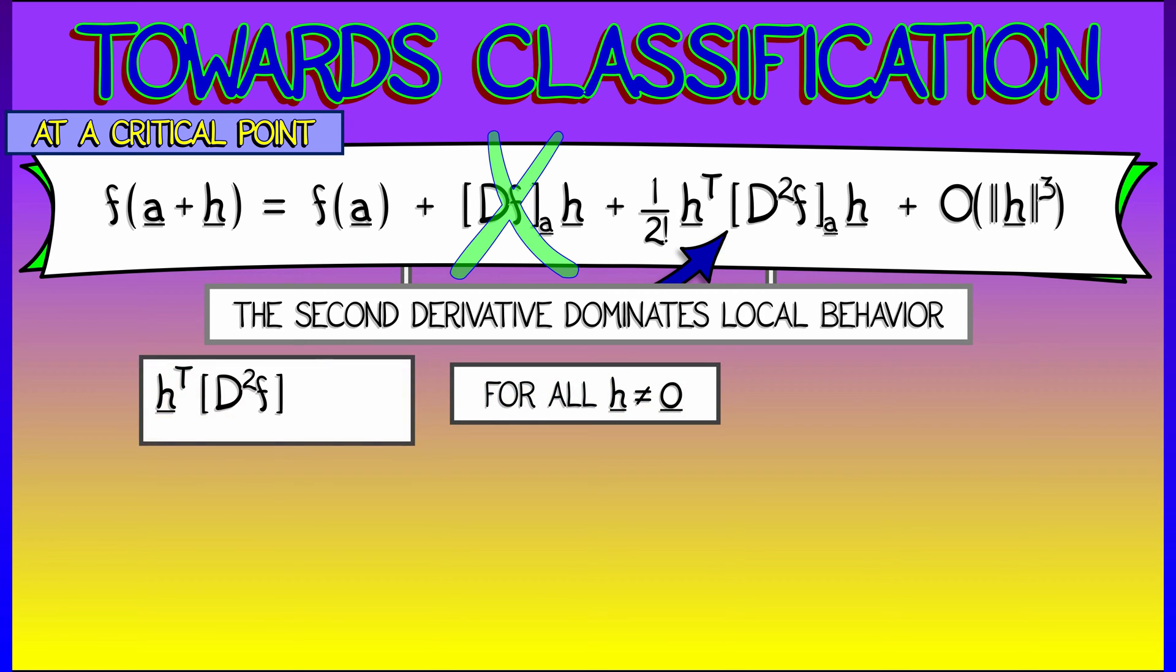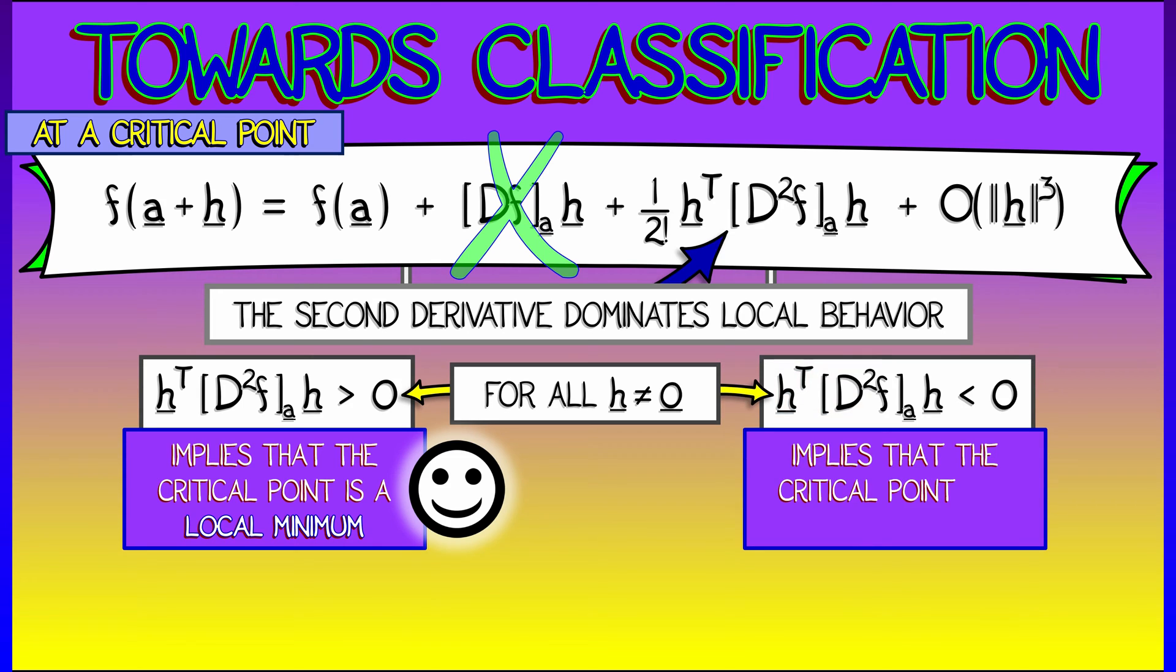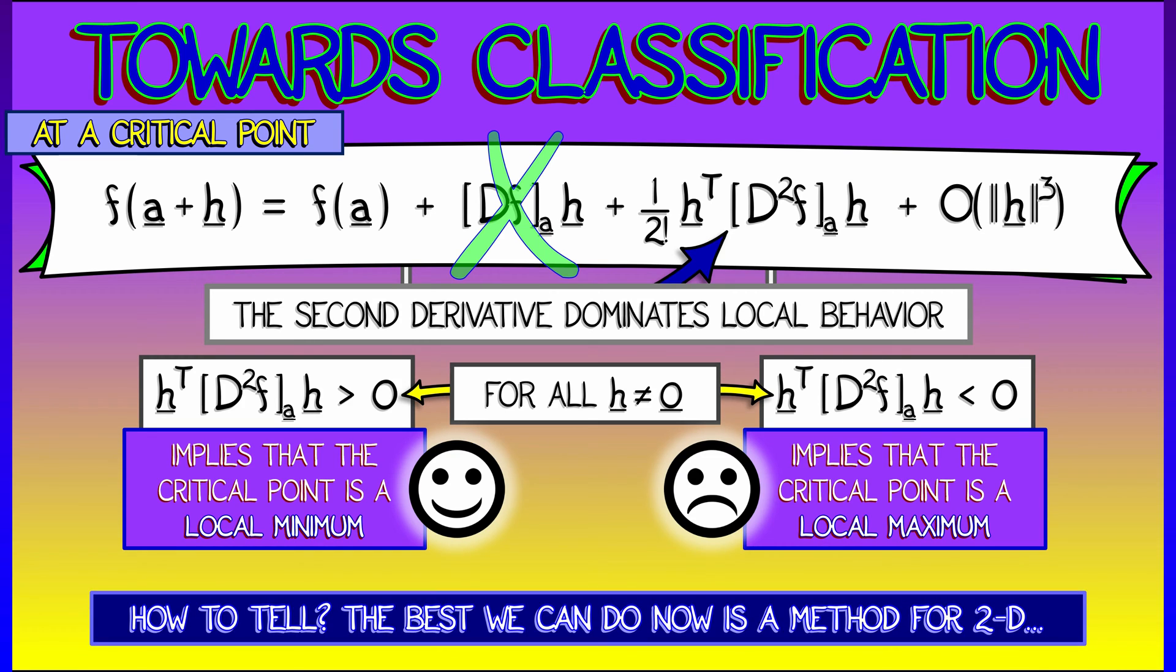So what we're going to say is that if that second order term is positive for all non-zero h, then that implies that we have a local minimum. A positive second derivative, local minimum, just like single variable calculus. And likewise, if that second order term is always negative for h non-zero, this is going to imply that our critical point is a local maximum. But these conditions on these matrices for always being positive or always being negative, that's not so obvious or easy to figure out. How do we tell?